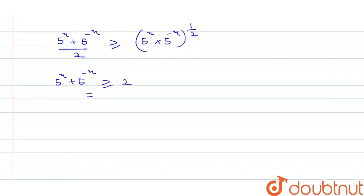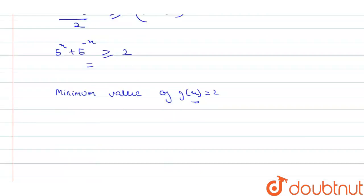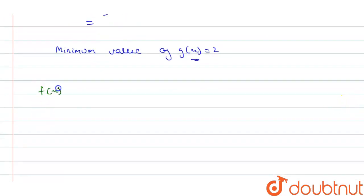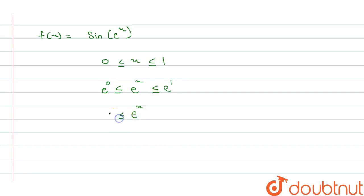Therefore, the minimum value of g(x) is 2. Now for f(x) = sin(e^x): since x lies between 0 and 1, we have e^x lying between e^0 and e^1, so e^x lies between 1 and e.